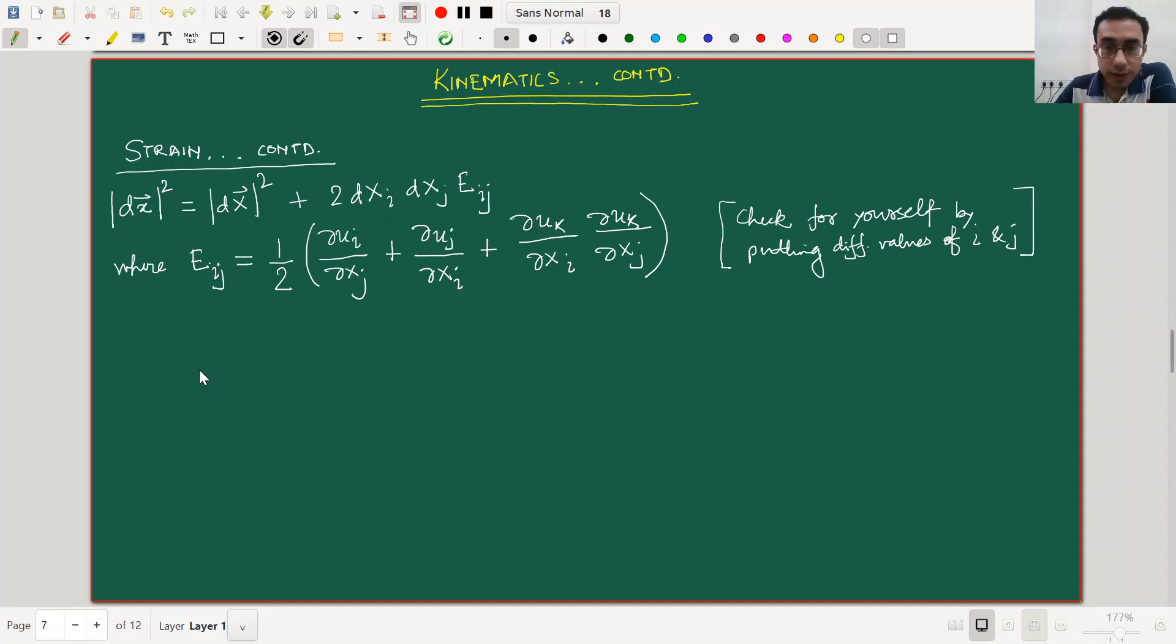Now, we quickly note down a few important things here. This E_ij, which is in compact notation this second order tensor, is referred to as the finite strain tensor. And immediately you should be asking yourself, does it mean that there is something like an infinitesimal strain tensor? The answer is yes, there is very much such a strain tensor, which is what actually we will be using throughout the rest of this course, and we will discuss about that a little later.